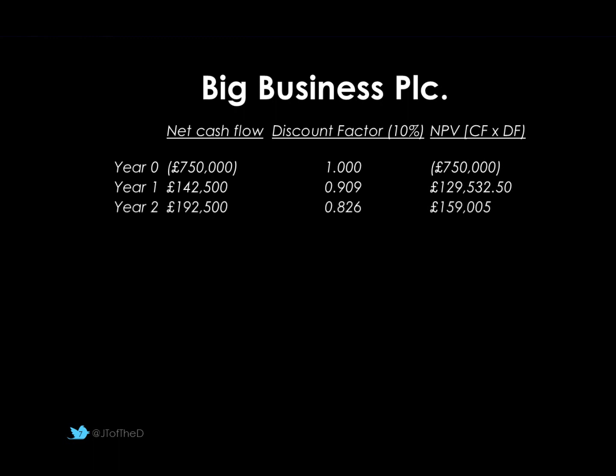We do the same for year two. You'll notice the discount factor is now becoming smaller — we're penalising that cash flow the longer we have to wait for it. This time £192,500 multiplied by 0.826 becomes £159,005. Again, with compound interest, if I put that in the bank for two years at 10%, that would be exactly the same as having £192,500 in two years' time.